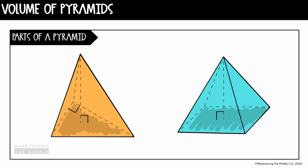There are also square pyramids, but those are usually indicated by the measurement showing that it's a square, or the problem would tell you that. Another thing about pyramids we have to remember is the height. The height of the pyramid is shown right here, and we know it's the height because it makes a 90-degree angle with the base.